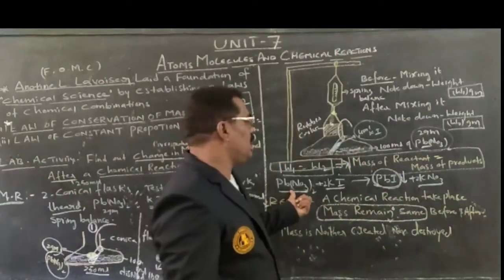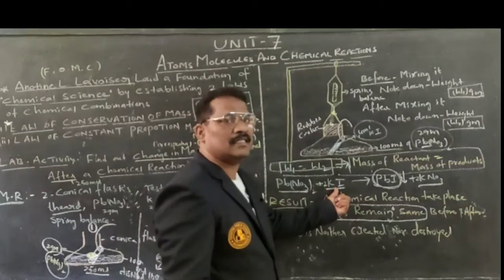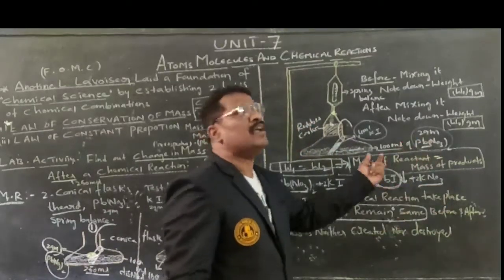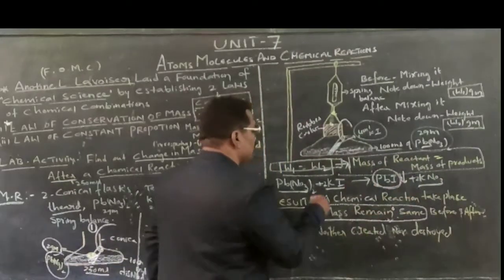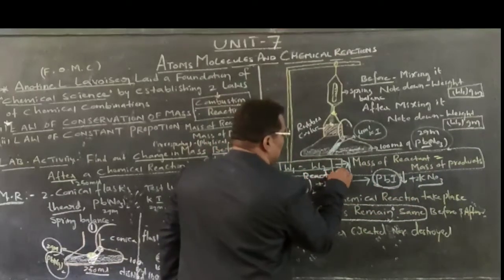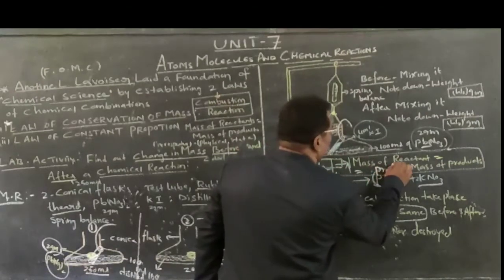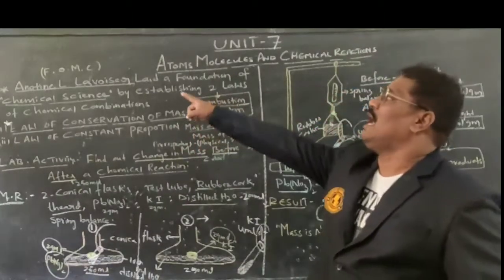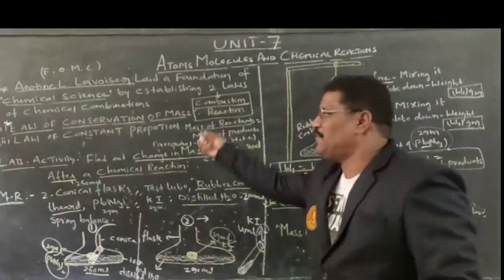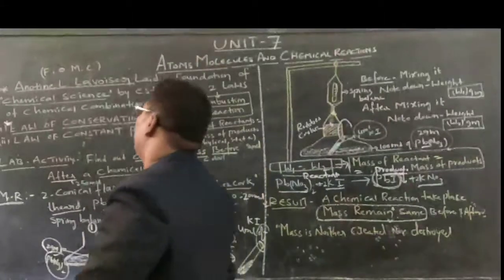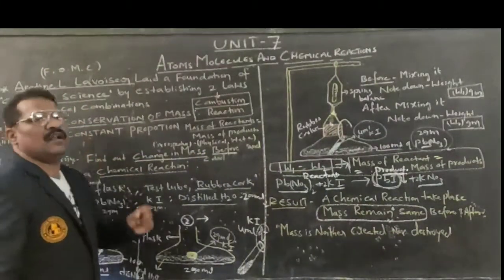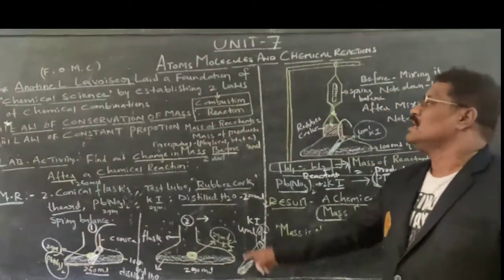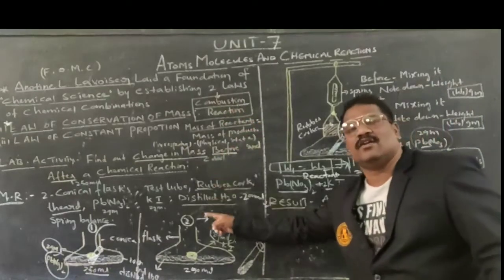In the form of reactants, lead nitrate as well as potassium iodide are existing. But when the reaction takes place, lead iodide as well as potassium nitrate form - they reappear in another form, but the same amount of mass is existing. The mass towards the reactant side is equal to the mass towards the product side. This phenomenon was explained by Anthony L. Lavoisier, who framed two different laws - one is the law of conservation of mass, and the other one is the law of definite proportion or constant proportion.